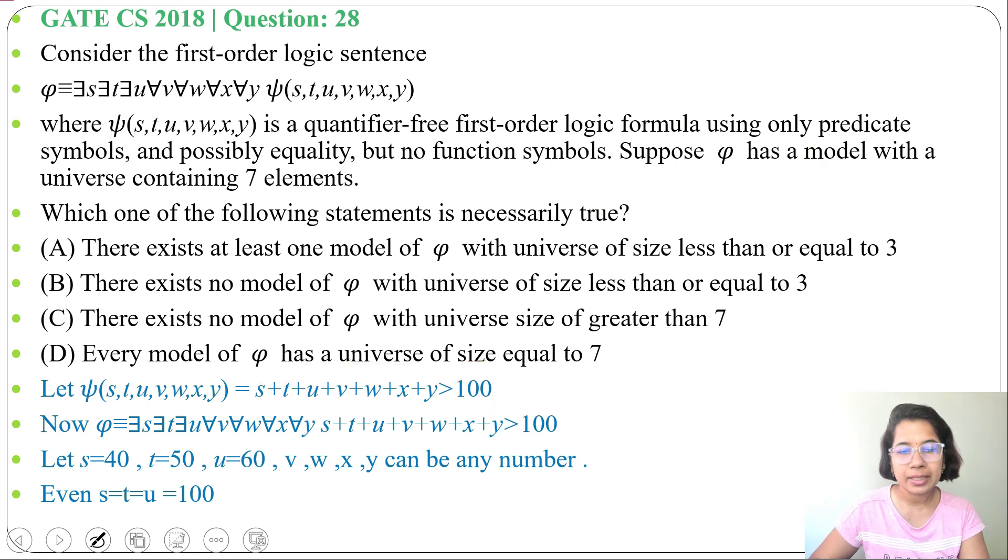So there exists at least one model of φ with universe of size less than or equal to 3. Here it's 3. When we consider just s equals 101, it's 1. When s+t is greater than 100, it's 2. So it can be less than or equal to 3. Answer is option A.